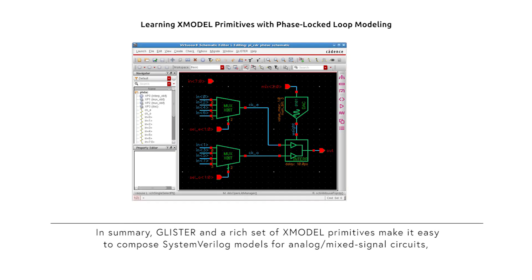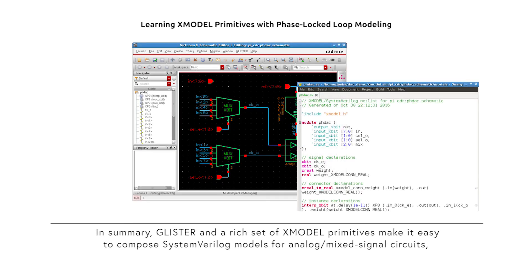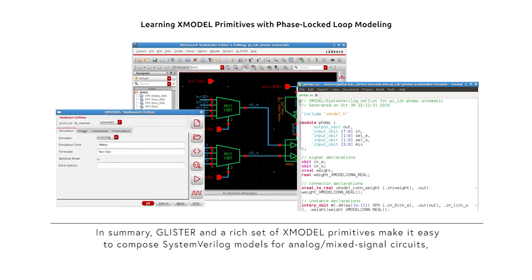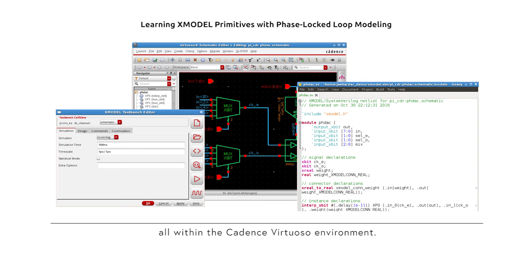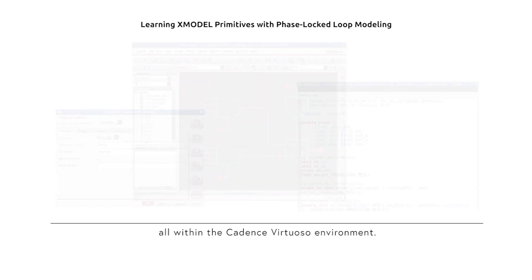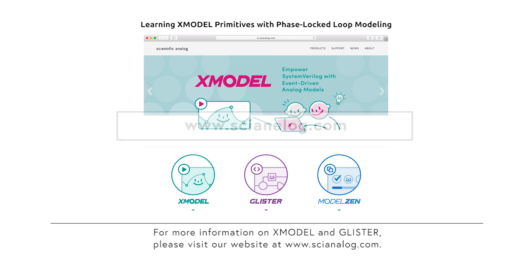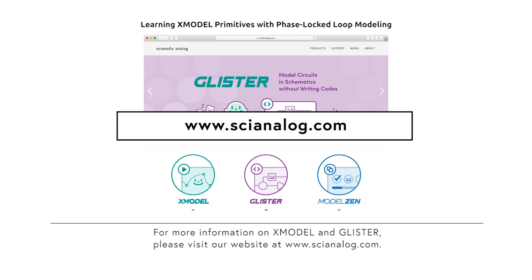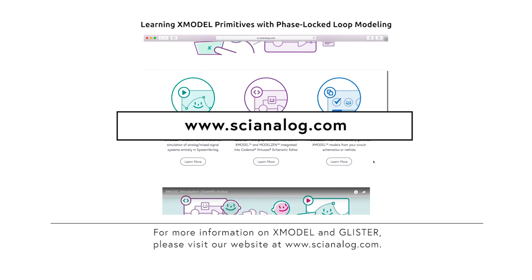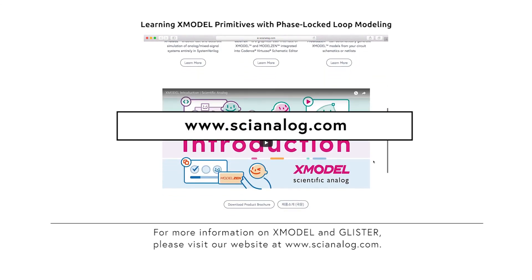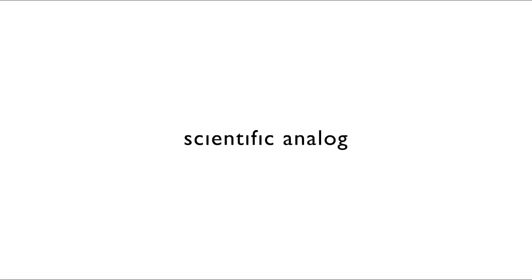That's it. In summary, Glister and a rich set of X-Model primitives make it easy to compose SystemVerilog models for analog mixed-signal circuits, all within the Cadence Virtuoso environment. For more information on X-Model and Glister, please visit us at www.scientificanalog.com.